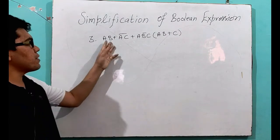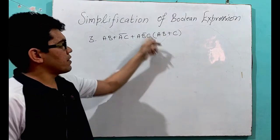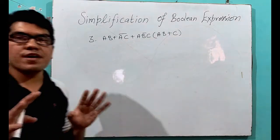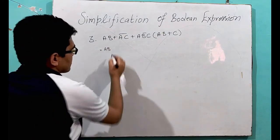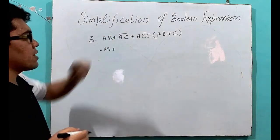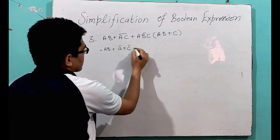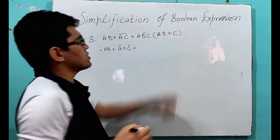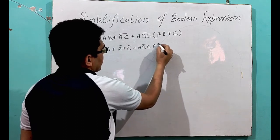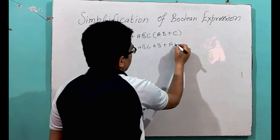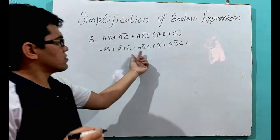This is our third example: AB plus (AC)̄ plus AB̄C, multiplied into (AB plus C). This expression we have to minimize. Write AB as it is. Now remove the bar using De Morgan's law, so it will be Ā plus C̄. Now multiply this into the bracket, giving AB̄C·AB plus AB̄C·C.